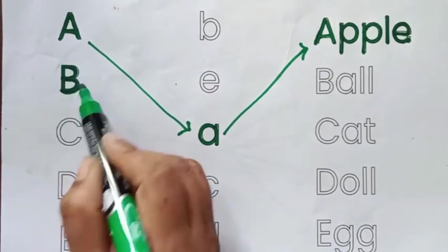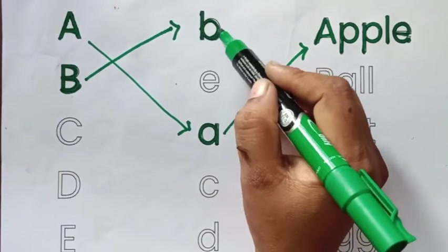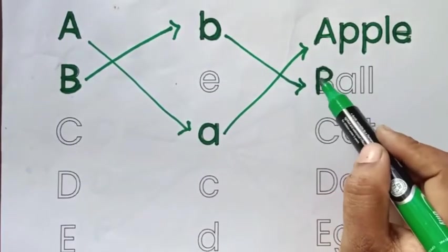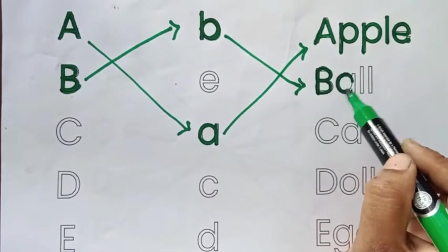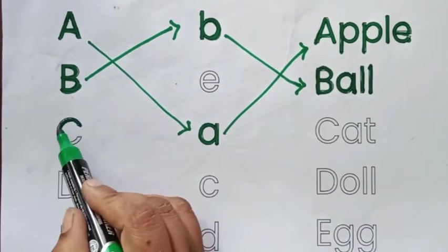Capital letter B, Small letter B, B for Ball. B, A, Double L. Ball, B for Ball.